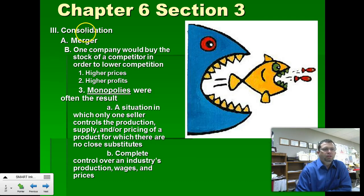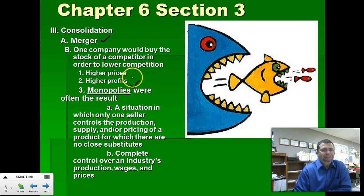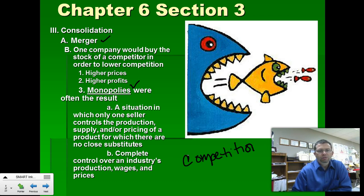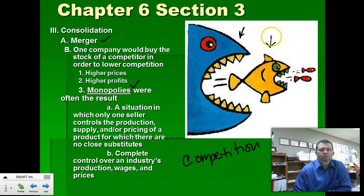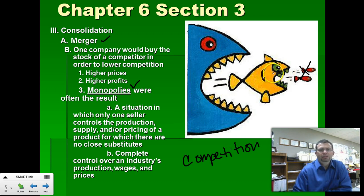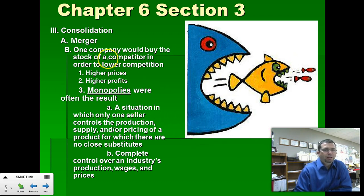Consolidation: as smaller companies begin to fail and fade away, larger companies buy them up. We call this a merger, when one company buys into the stock and gains control of a smaller company. Consolidation results in monopolies and eliminates competition. Look at the picture — this larger fish is essentially consolidating the smaller fish, eliminating competition. The smaller fish will no longer be eating the food that the big fish needs. And the government was not doing anything to step in and stop consolidation.